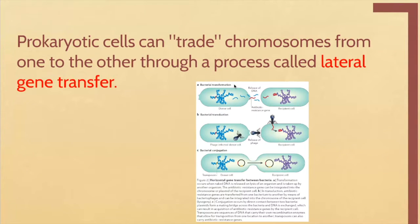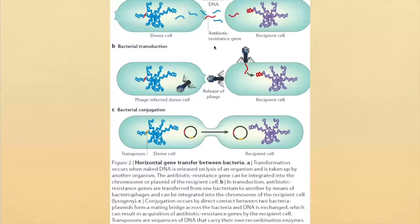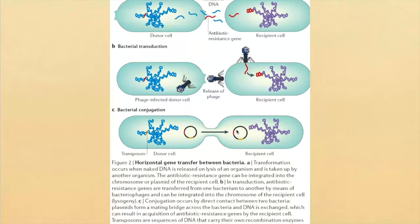Two bacteria can get up next to each other and share pieces of DNA. You can see here: one has a circular piece of DNA called a plasmid, and the two bacteria can line up and share DNA. This is actually a big problem in hospitals right now — if bacteria develop genes to make them resistant to antibiotics, some bacteria can share that with other bacteria, so those traits can spread.